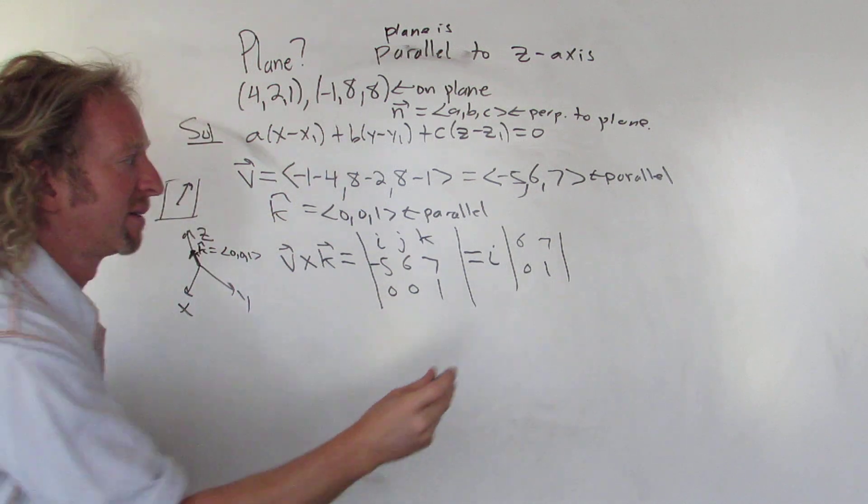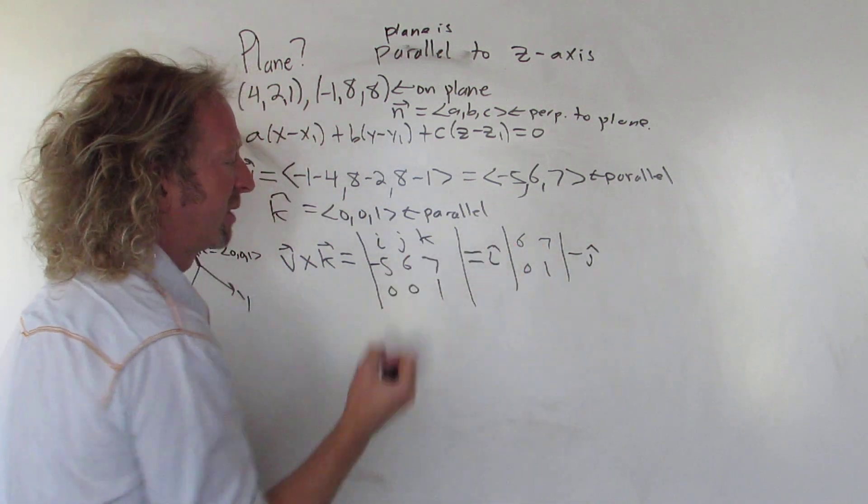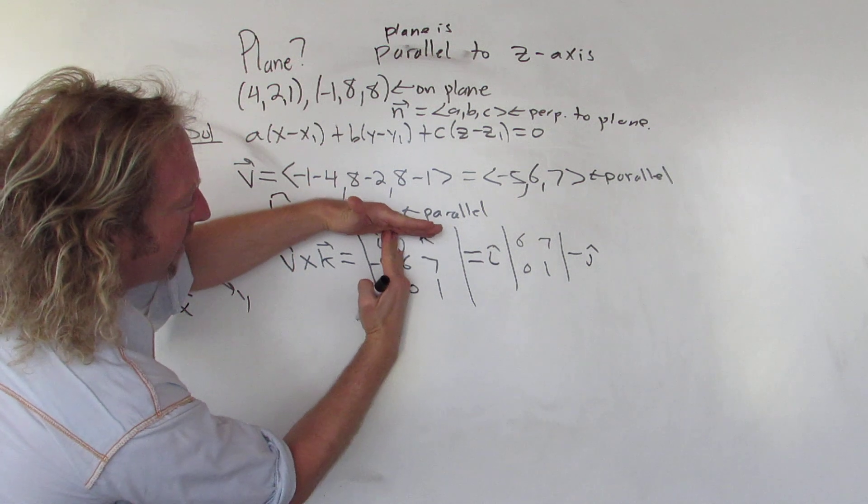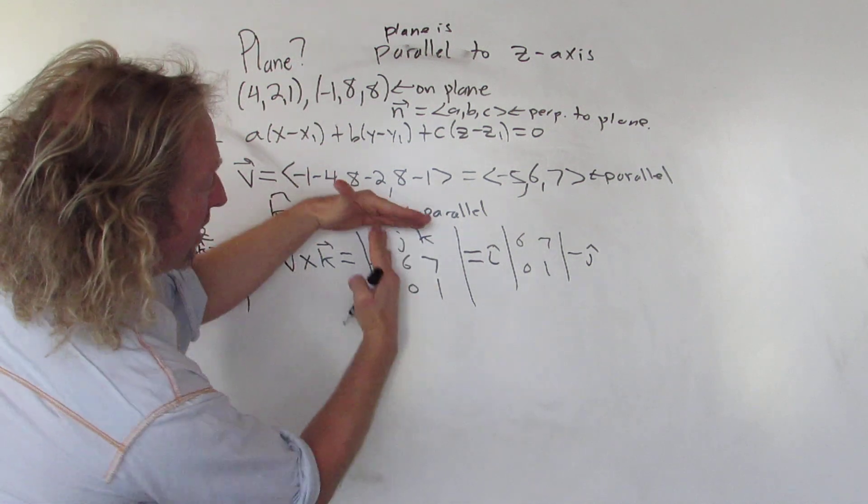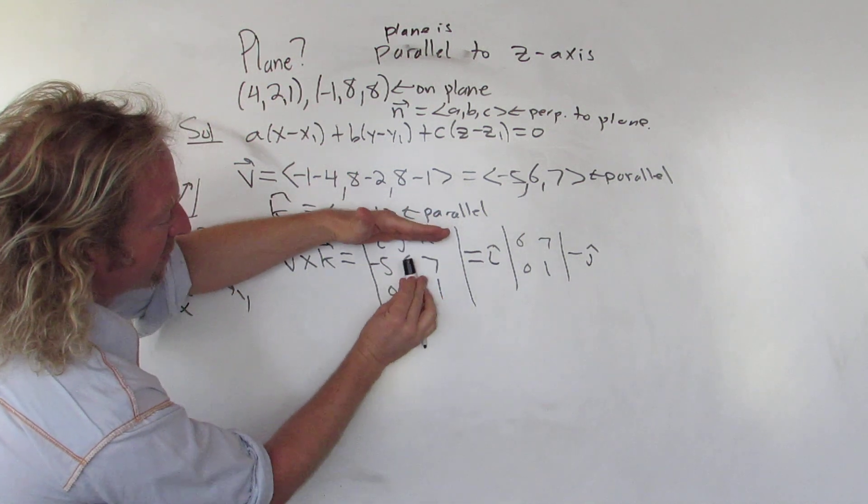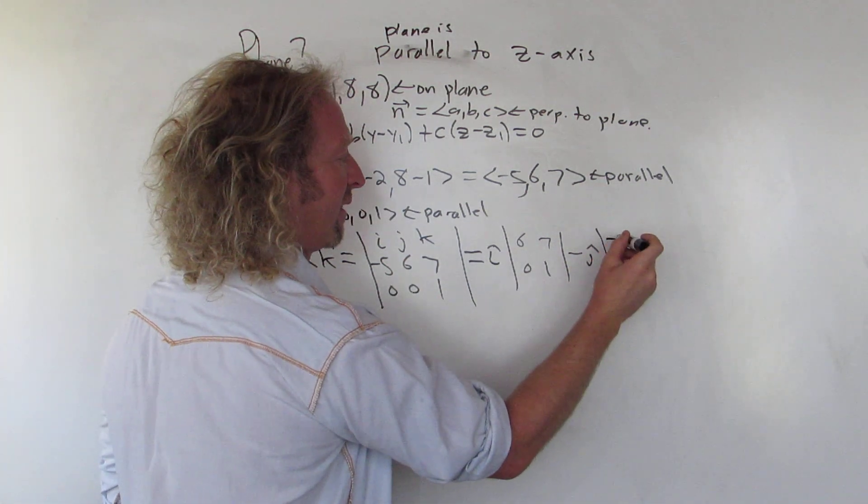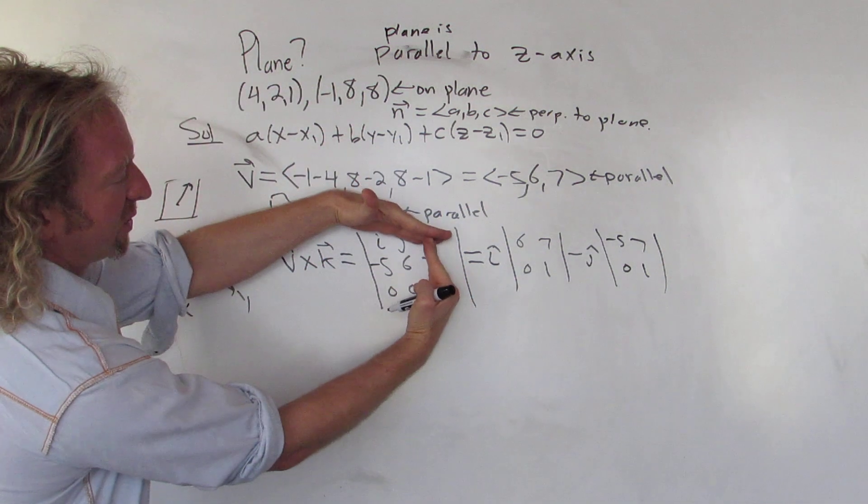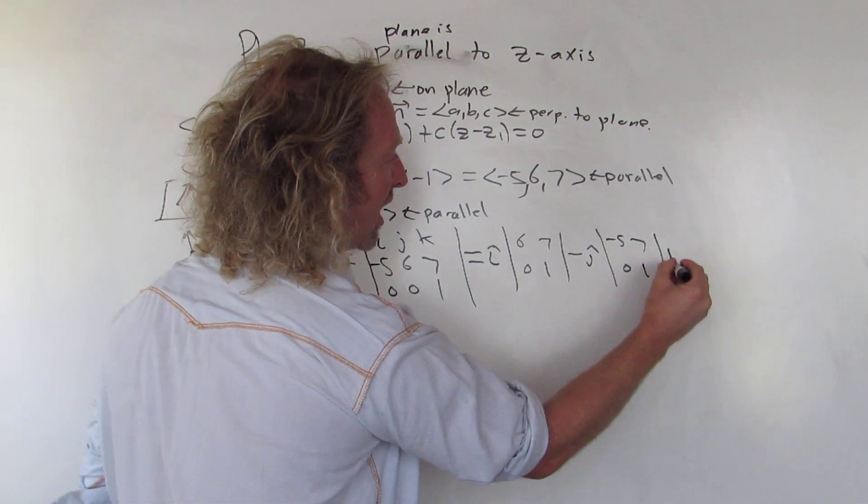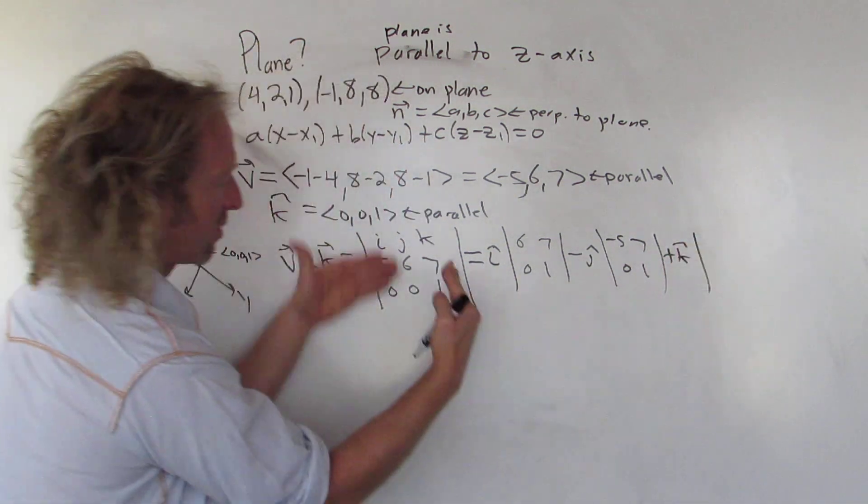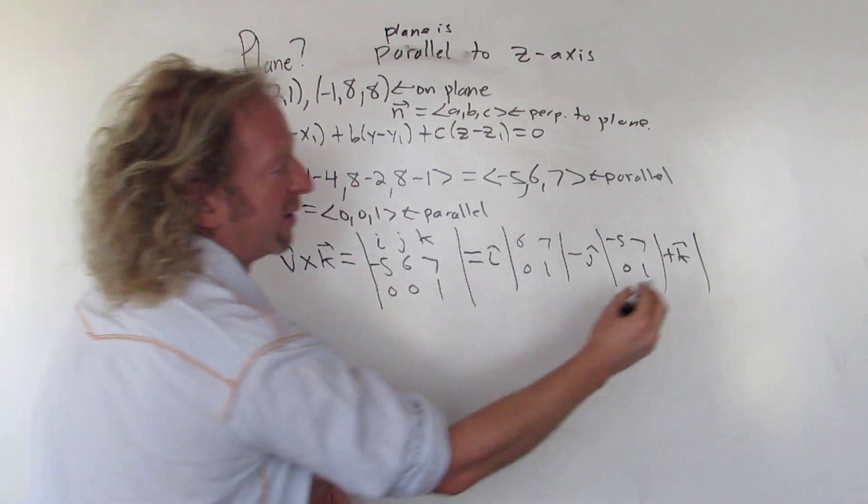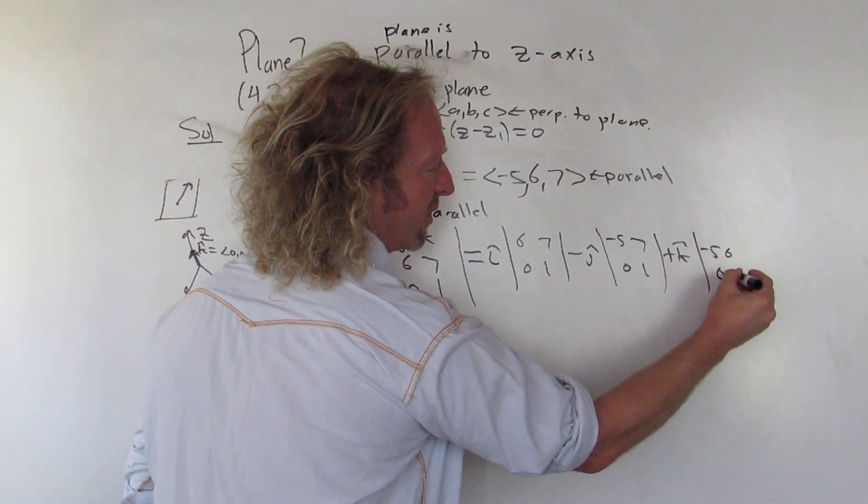And it's minus j-hat. And you cross those out. Negative 5, 7, 0, 1. You see it? Negative 5, 7, 0, 1. Here we go. It's a little bit easier. Negative 5, 7, 0, 1. And then you cross these out. So, plus k-hat. And then you cross these out. Negative 5, 6, 0, 0. So negative 5, 6, 0, 0. That's the cross product.